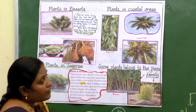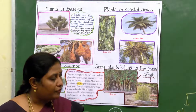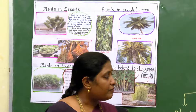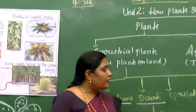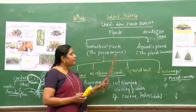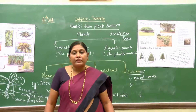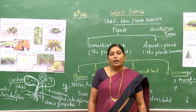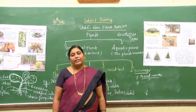So under terrestrial plants, we find plants growing in the plains, mountains, deserts, coastal areas, and swamps, each having special adaptations for their survival in that particular area. We have learnt about the concept of terrestrial plants. In the next class, we can study about aquatic plants — how plants survive in water with special adaptations. Thank you, students.